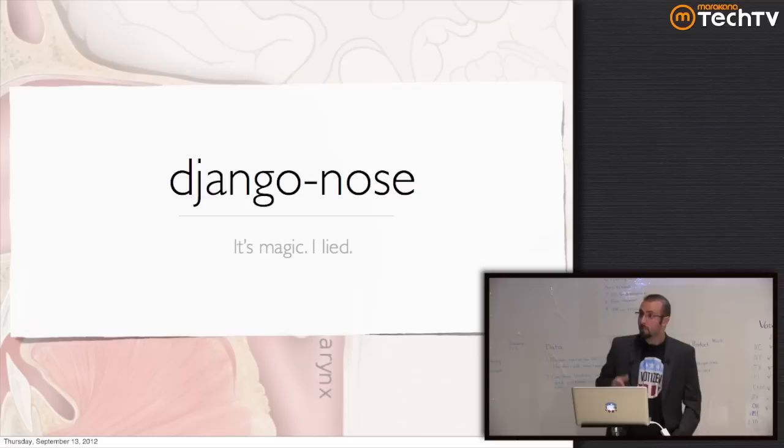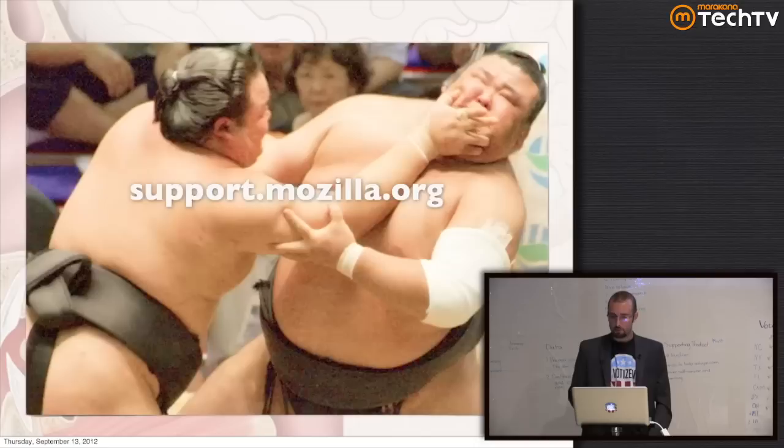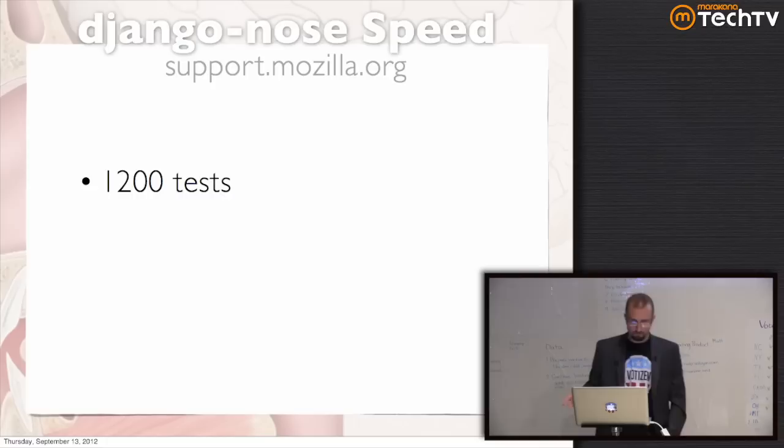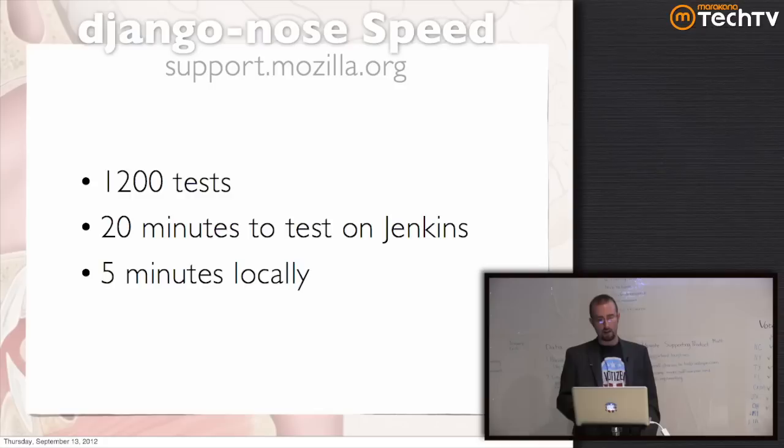To demonstrate those, I'm going to use the example of support.mozilla.org, affectionately nicknamed Sumo, which I used to work on. It's got about 1,200 tests, gets about a billion hits a month, and is a moderate-sized site for Mozilla. Over time those tests have grown to take about 20 minutes on the build server and five minutes locally.